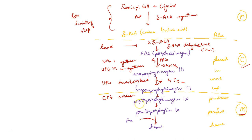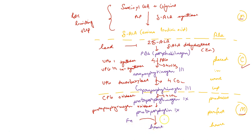Then another oxidation reaction: protoporphyrinogen 9 is converted to protoporphyrin 9 in the presence of protoporphyrinogen oxidase. It then incorporates iron to form heme in the presence of ferrochelatase enzyme.